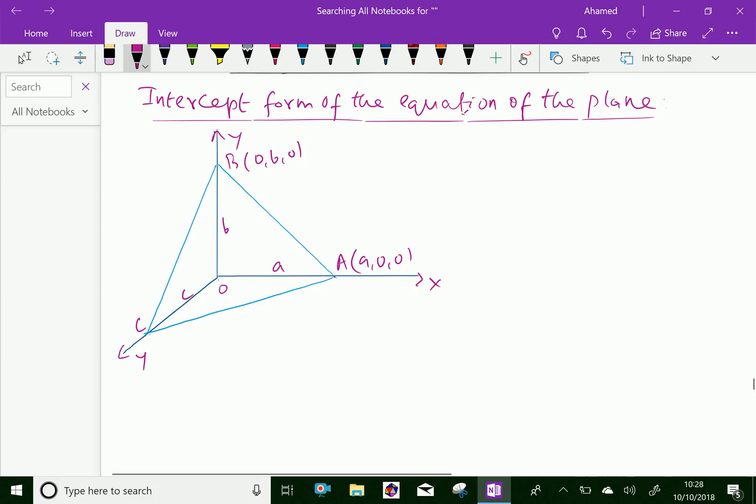From O to C is a distance C, and the coordinate of the point C is 0, 0, C.